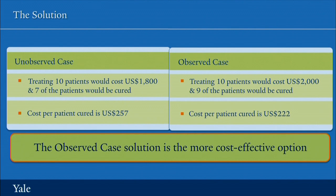If you were a policy maker, you'd also take account of other concerns: Would it be doable? Would it be sustainable? Would it be affordable? But if those things were at least equal, you would certainly choose observed therapy because it is more cost-effective.